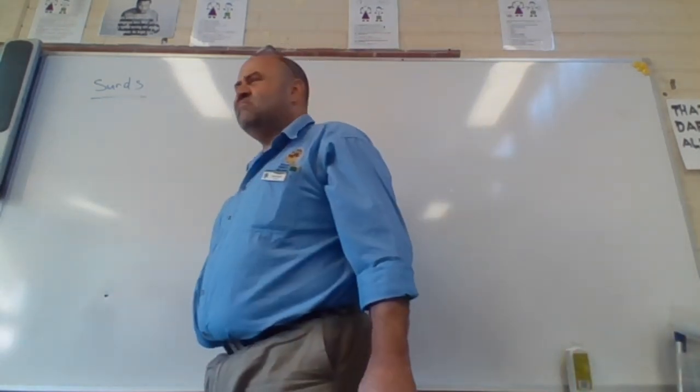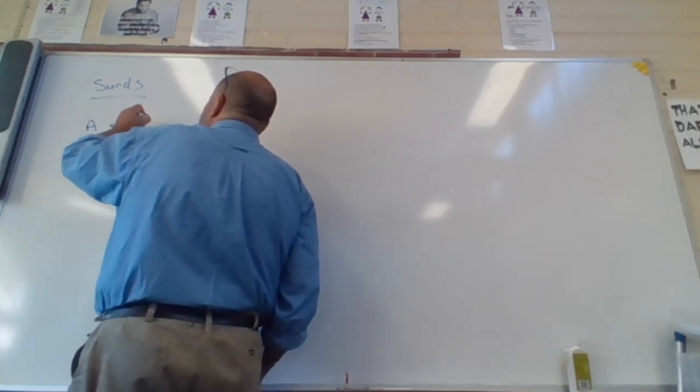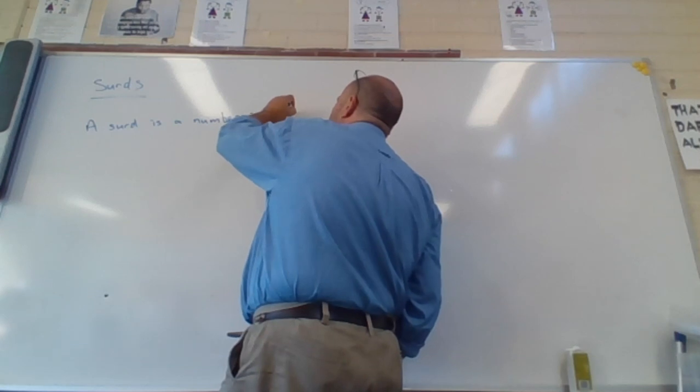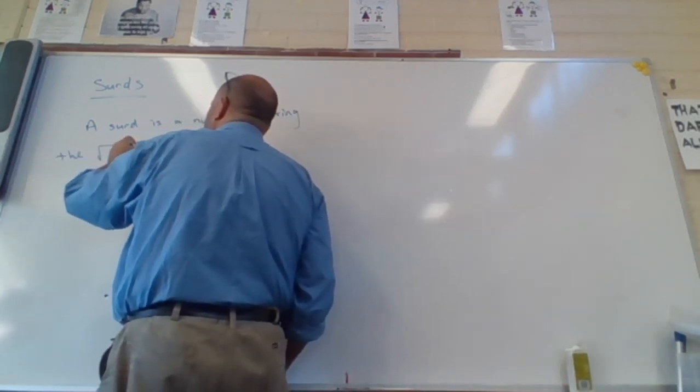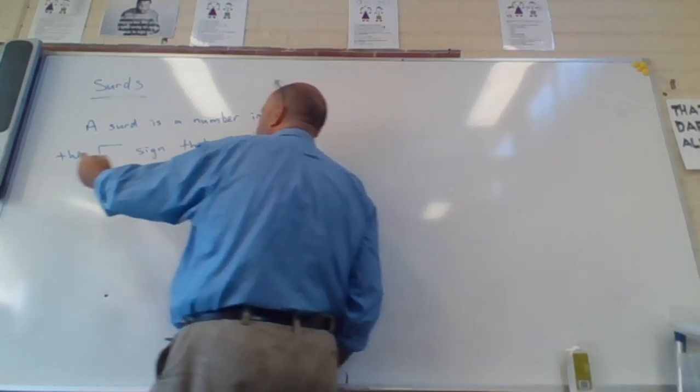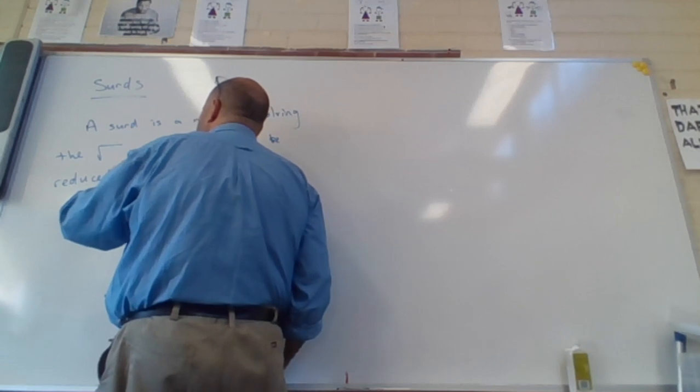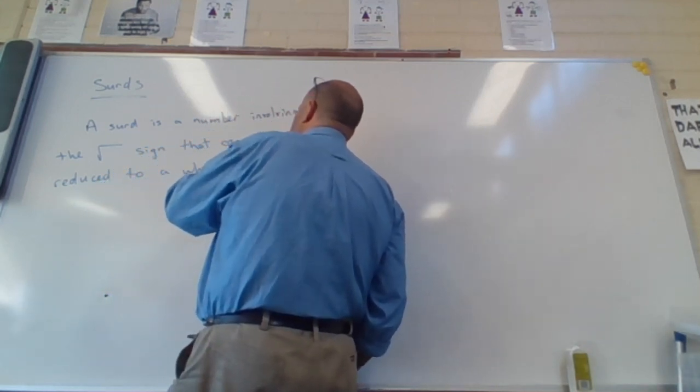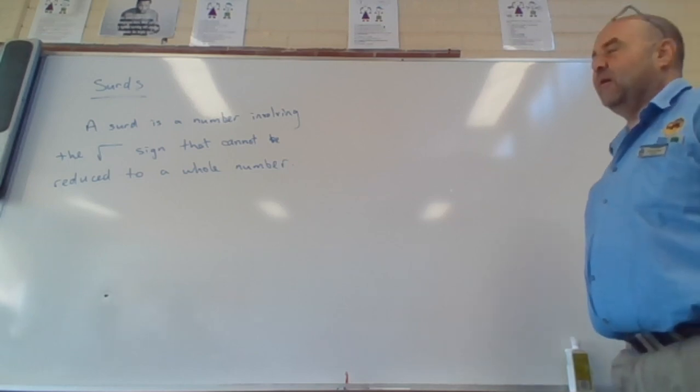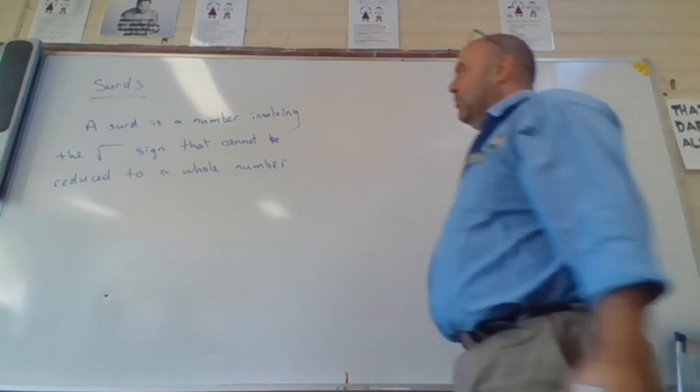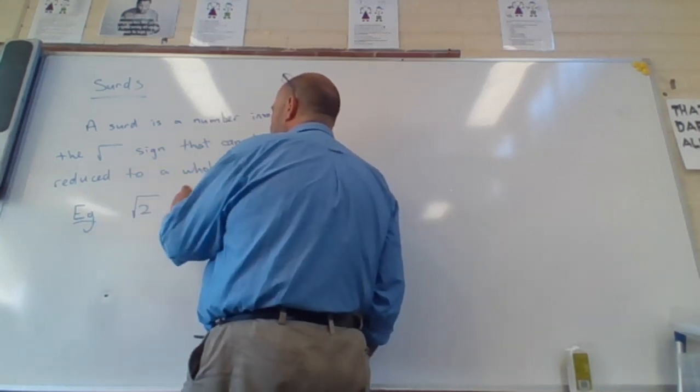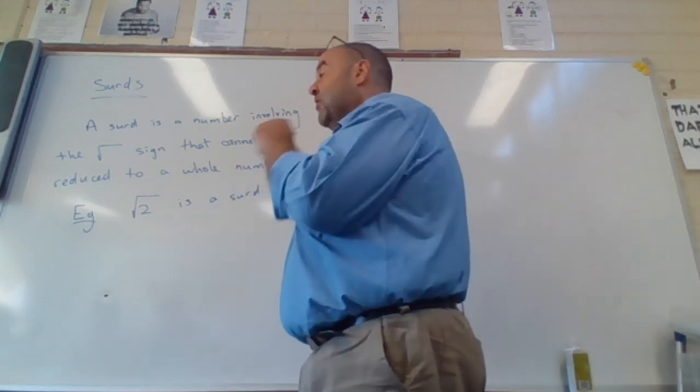So what's a surd? A surd is a number involving the root sign that cannot be reduced to a whole number. For example, root two is a surd. Root three is a surd.